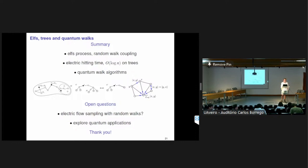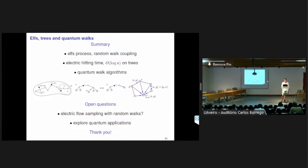Question: This seems motivated by electric flows on resistor networks. Are there applications to electrical engineering? Answer: I didn't mention it, but quantities like effective resistance are things you can calculate. There have been previous quantum algorithms for doing that, and one small result from our work is that we can compute it in a time that scales with escape time rather than commute time as in a previous algorithm. I don't know how useful computing effective resistances is practically for actual electronic engineering purposes.